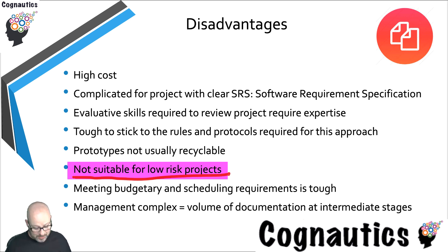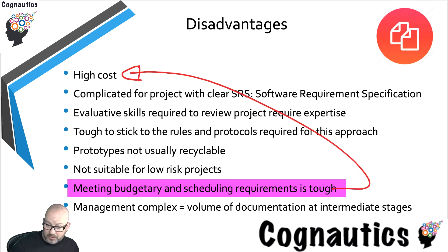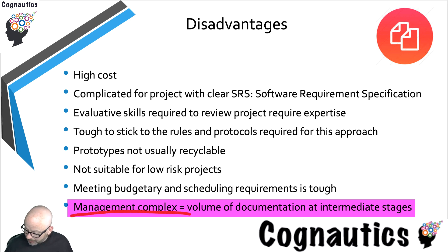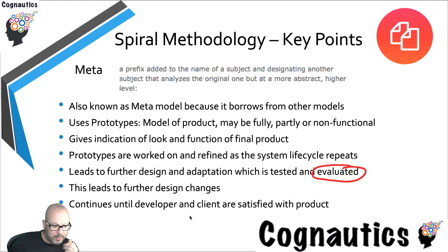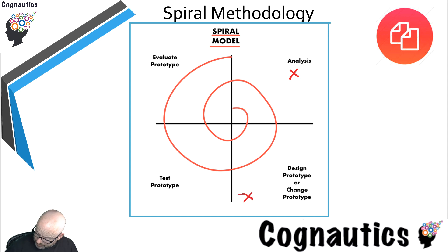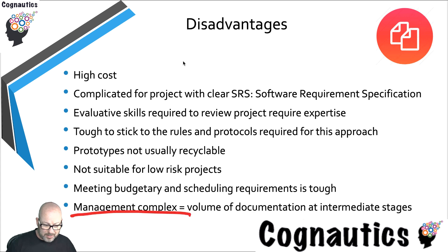Meeting budgetary and scheduling requirements is tough because it's an expensive methodology — which is really another way of restating the cost point. Lastly, management of the spiral model is complex and a lot of documentation is needed at intermediate stages. Looking at the diagram, documentation is required when you analyze, when you make your prototype, when you test it, and when you evaluate it. This generates a lot of extra cost, making it tough to stick to budgets.